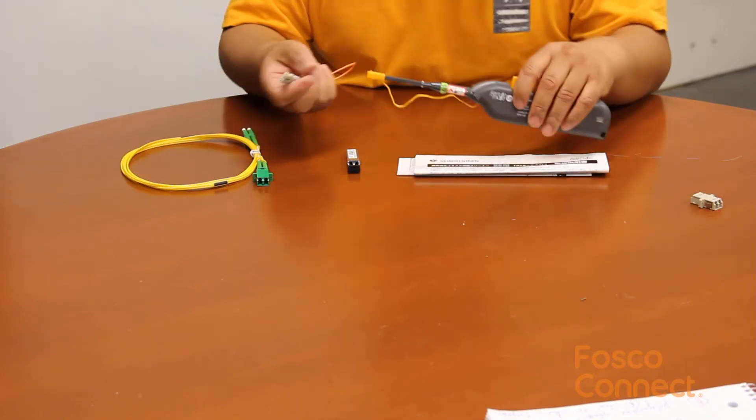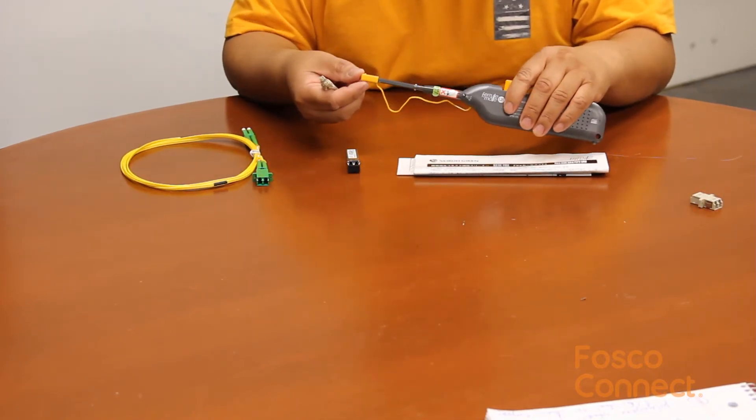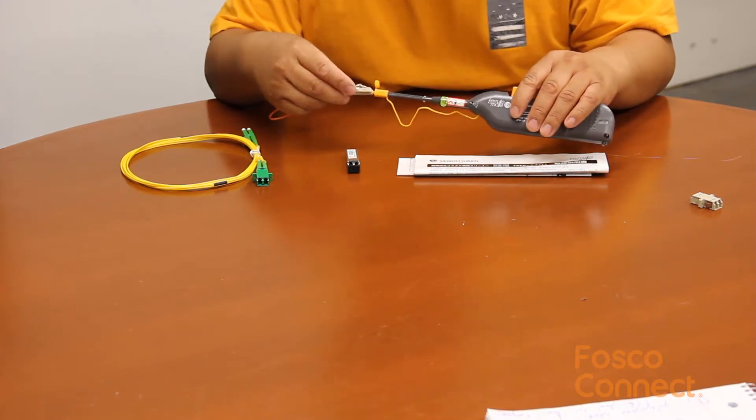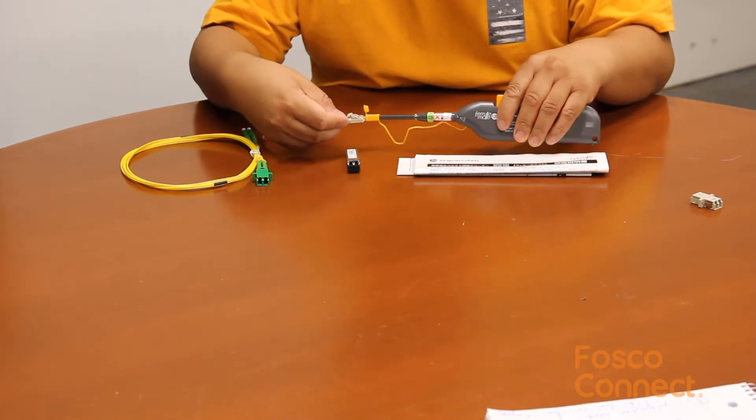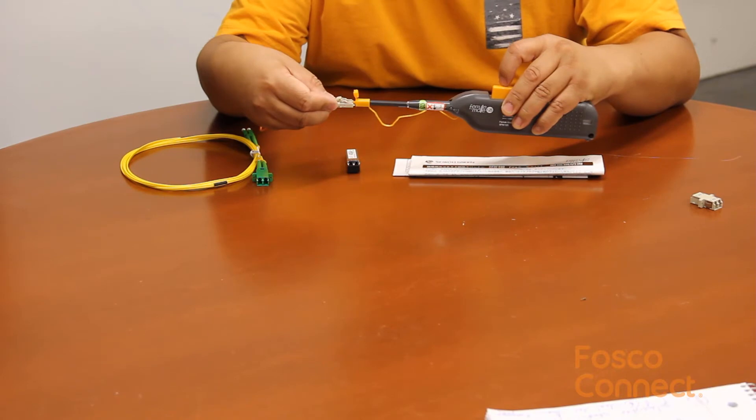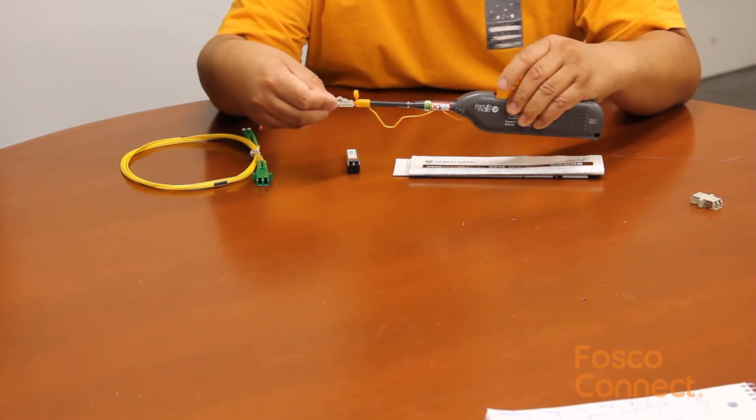To clean LC connectors directly, remove the front lid, insert the LC connector into the cap until it stops, keep the pressure, then press the click button once to clean the connector.